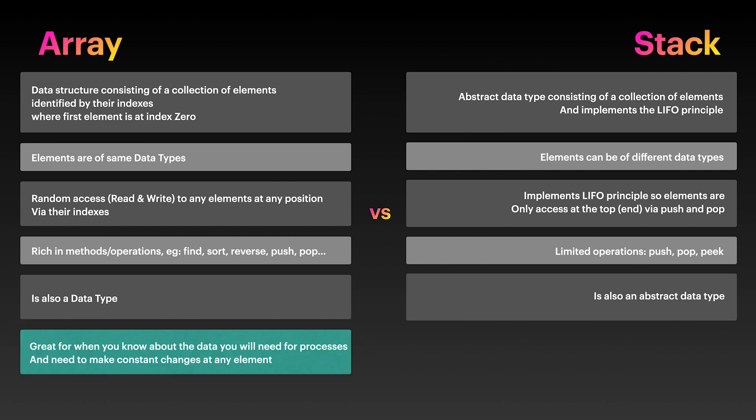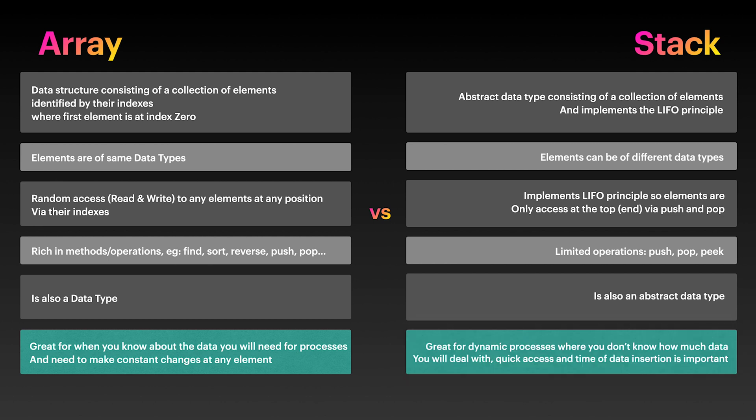Arrays are great when you know the size and type of data you are dealing with and expect to make random changes throughout your processing. Stacks are great for dynamic programming, as they can grow and shrink with the processes, especially if you care most about the latest insertion and removal whenever you need to process something.